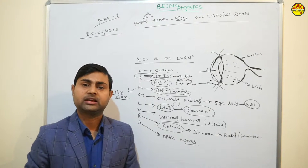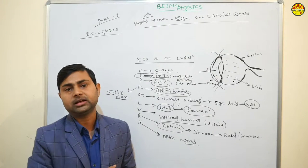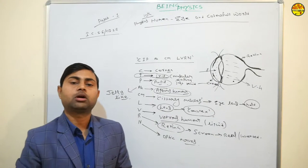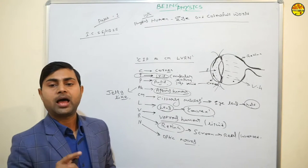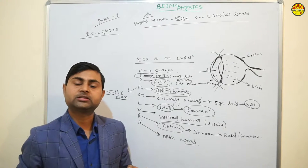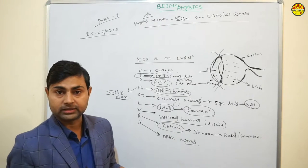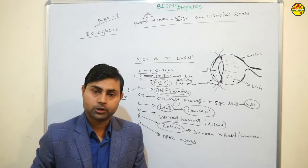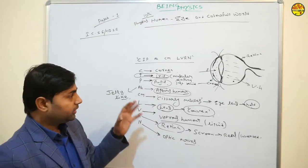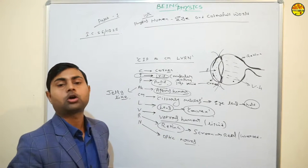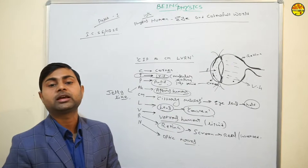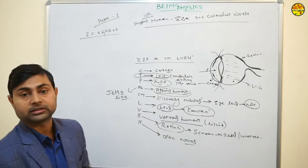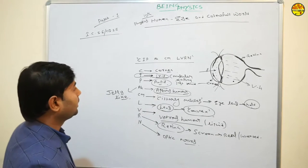As we care for our eyes, we sometimes develop defects. In our eyes there are two major defects: Myopia and Hypermetropia — also called near-sightedness and far-sightedness. There are two other defects as well: Astigmatism and Presbyopia. Let us see these defects of the human eye one by one.